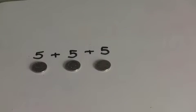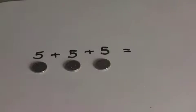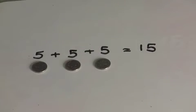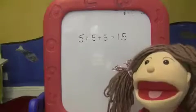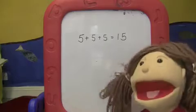And I'm adding them together, so let's put my plus symbols in. And what does it come to? 5 plus 5 plus 5 equals 5, 10, 15. So 5 plus 5 plus 5 is 15. 3 5s are 15.